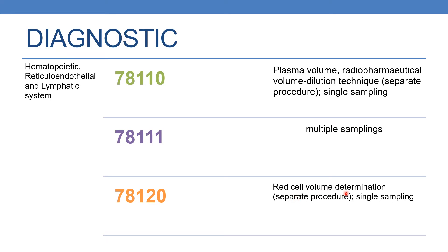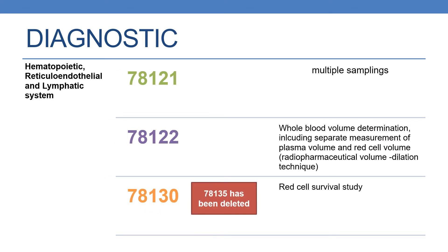The next code is 78120, which deals with red cell volume determination, separate procedure, single sampling. Whenever it is done as a separate procedure and single sampling is done, you need to report 78120. The next code is 78121, which deals with red cell volume determination, multiple samplings.